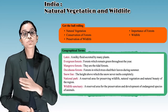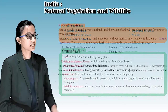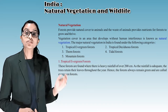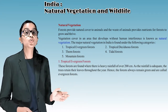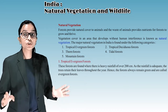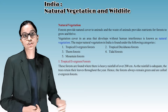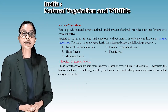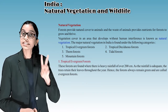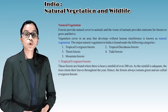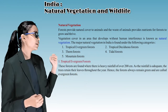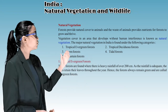Wildlife sanctuary is a reserved area for the preservation and development of endangered species of animals. Natural vegetation forests provide natural cover to animals, and the waste of animals provides nutrients for forests to grow. Vegetation cover in an area that develops without human interference is known as natural vegetation. The major natural vegetation in India falls under five categories: tropical evergreen forest, tropical deciduous forest, thorn forest, tidal forest, and mountain forest.